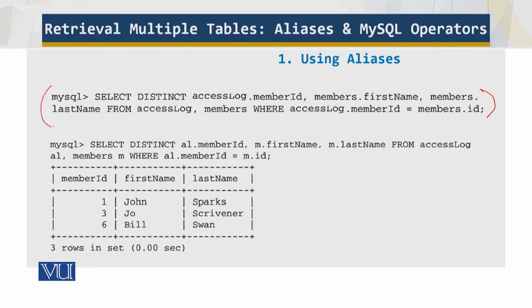So why do we use or why do we need aliases? As you start to work with many tables, things can start to go unwieldy. For example, in the preceding section, you used this query to retrieve a list of names of members who have accessed the website. And there's a lot of repetition of the table names — access_log and members — in this query. You can see over here, we have a lot of repetition, so that becomes very complicated.